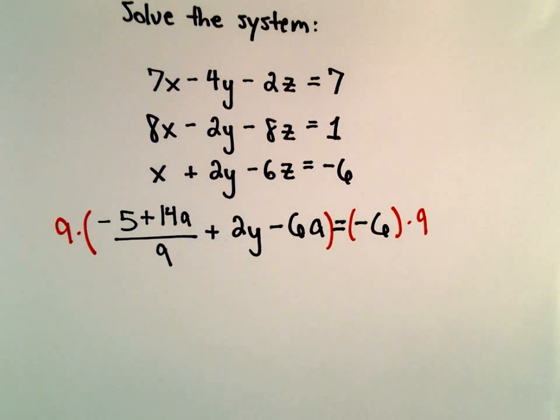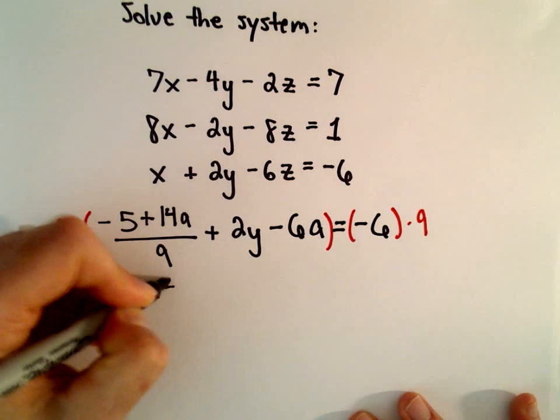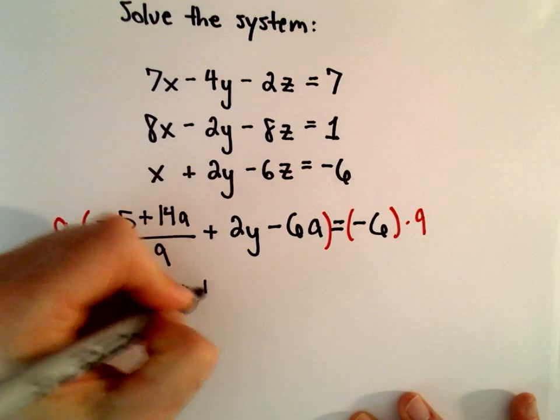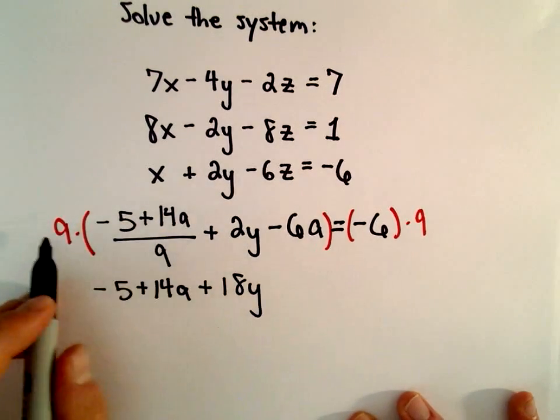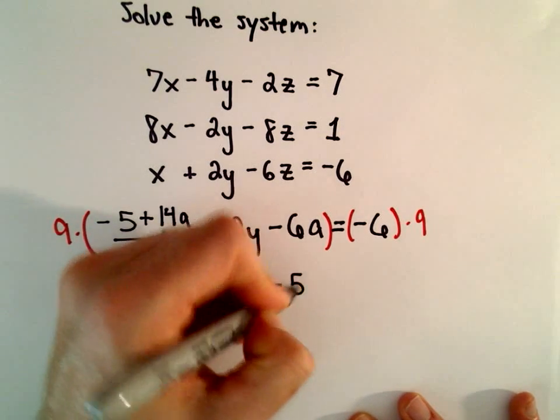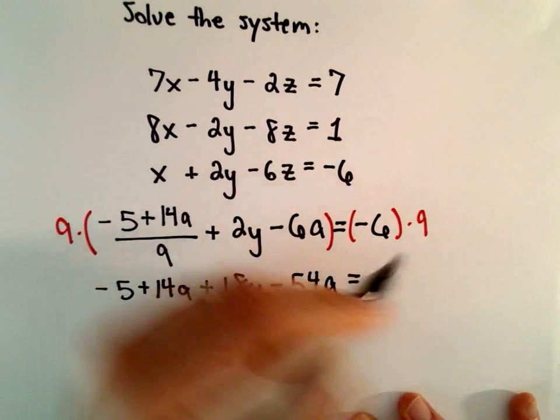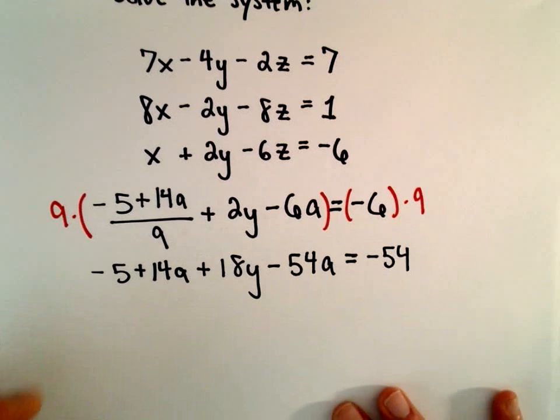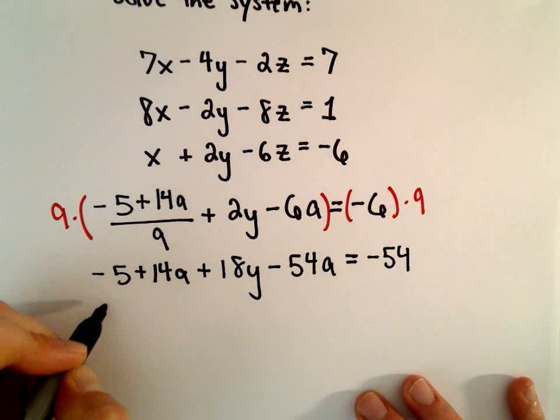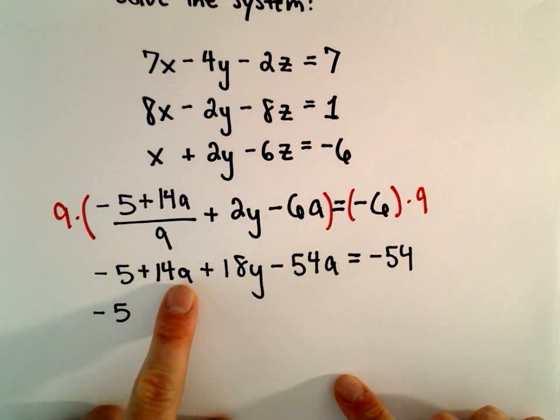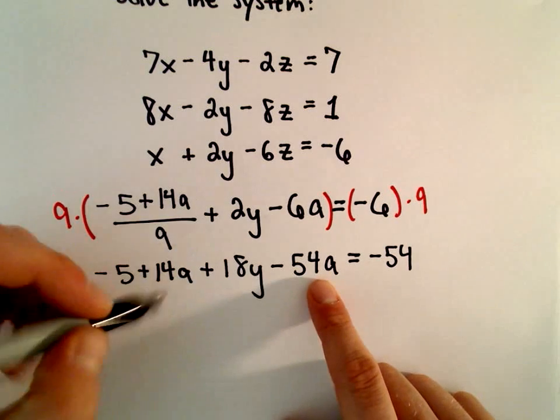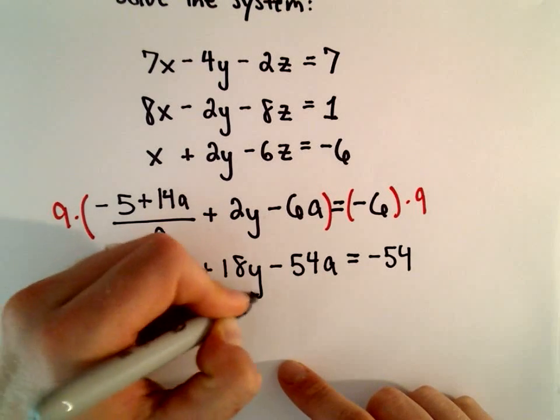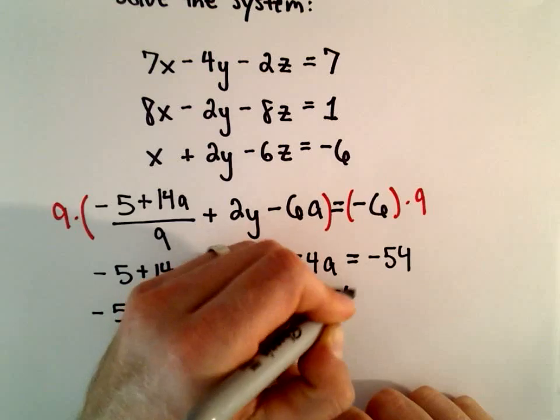So when we distribute that, we'll have negative 5 plus 14a. The 9s will just cancel out. 9 times positive 2y will be positive 18y. And then 9 times negative 6a will be negative 54a. And 9 times negative 6 will be negative 54. So we've got negative 5. We've got a positive 14a minus 54a. That's going to leave us with a negative 40a plus 18y equals negative 54.